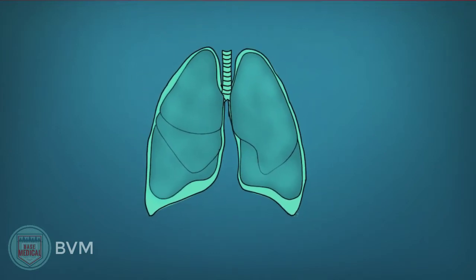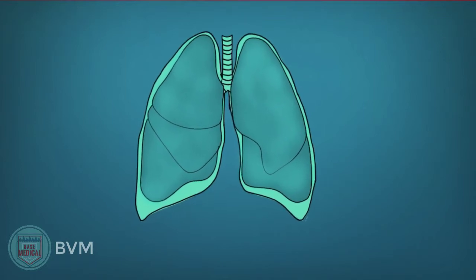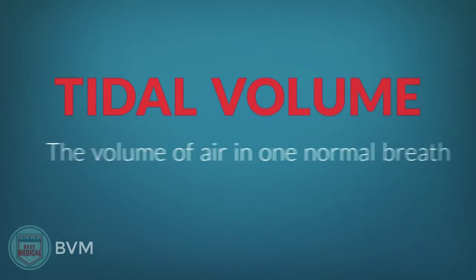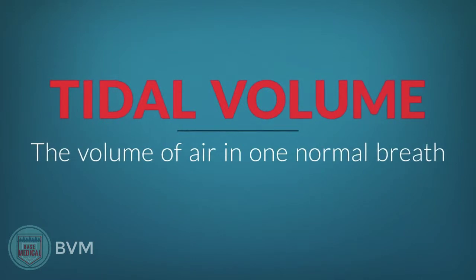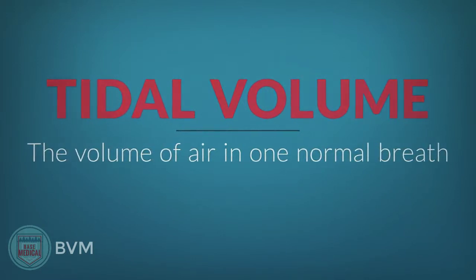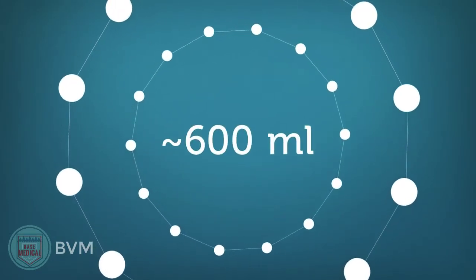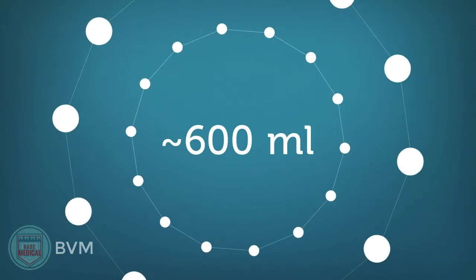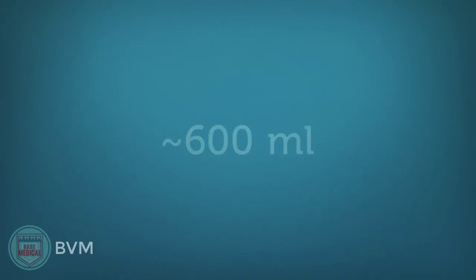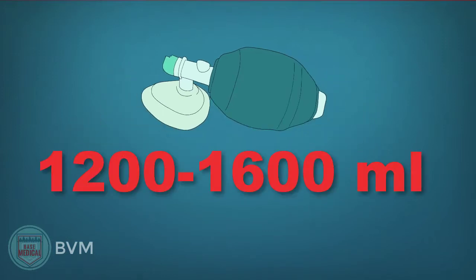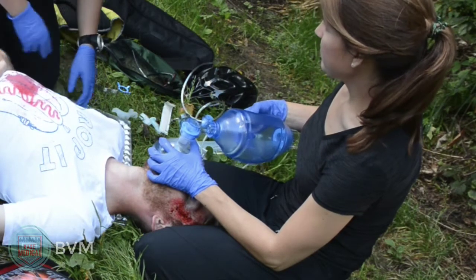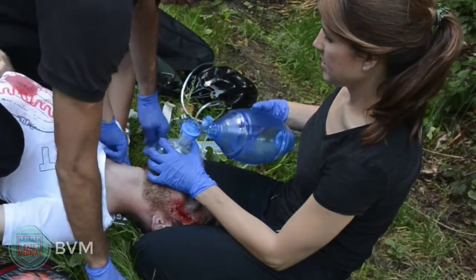The lungs have a set capacity of air they can hold, but we do not normally inhale anywhere near this volume. The volume of air inhaled during normal inhalation is called tidal volume — it's one normal breath. On average, this is about 600 milliliters of air, and this is our goal amount to deliver to our patient with each squeeze of the BVM. The BVM has a volume of about 1200 to 1600 milliliters — well over the 600 milliliter per breath goal — so you must pay very close attention to how much air you are pushing into your patient with the BVM.